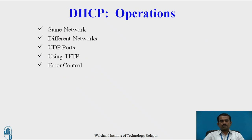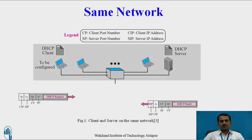Now, DHCP operations. There are five different operations: same network, different network, UDP ports, using TFTP, and error control. For the same network operation: if both client and server want to send and receive data, they can use the DHCP protocol. If both client and server are in the same network, we have certain concepts to follow.